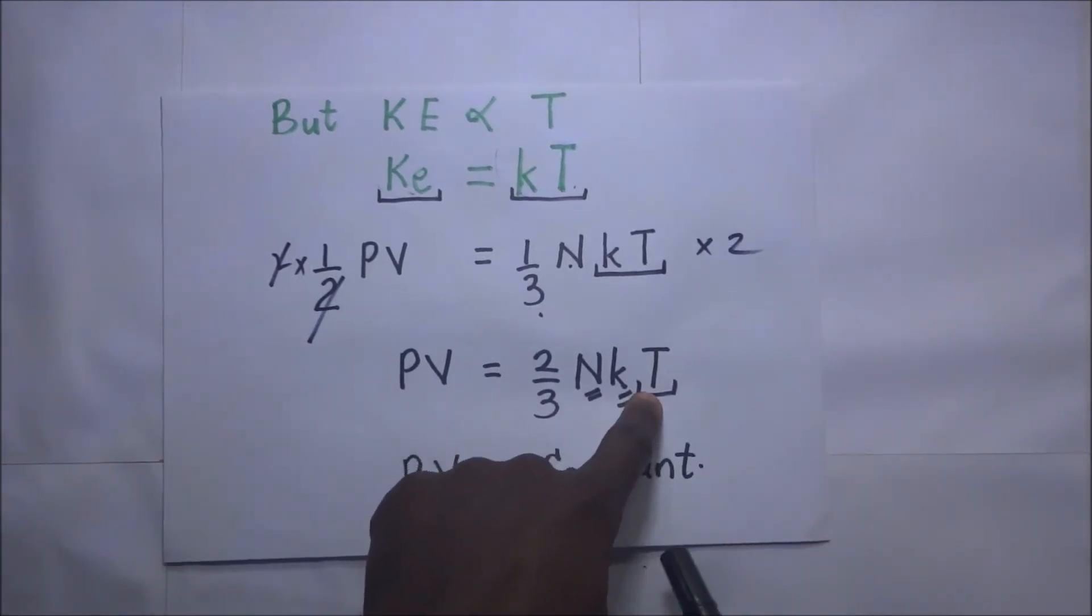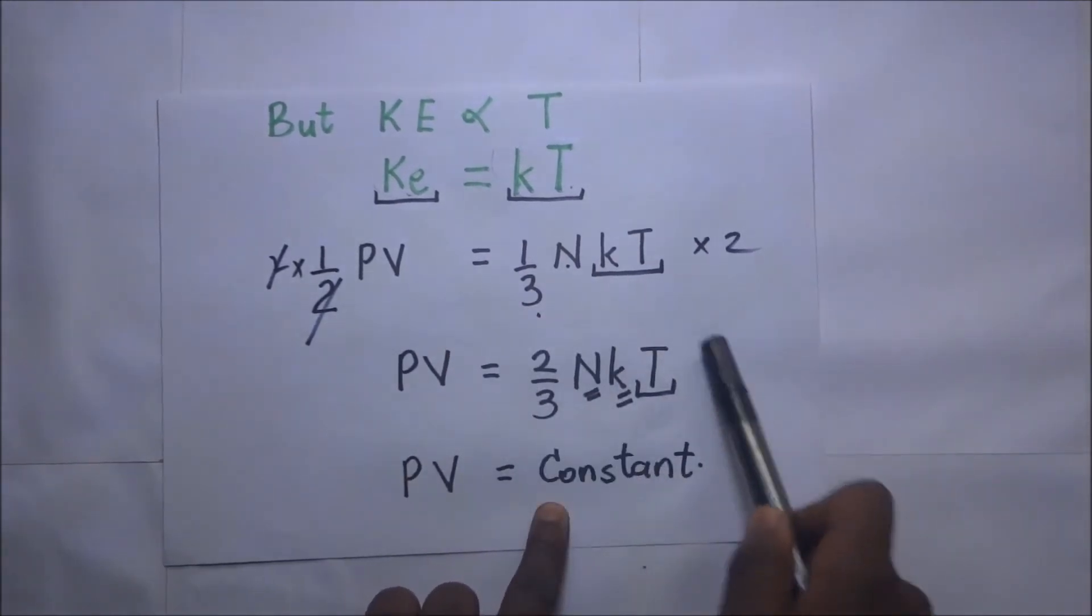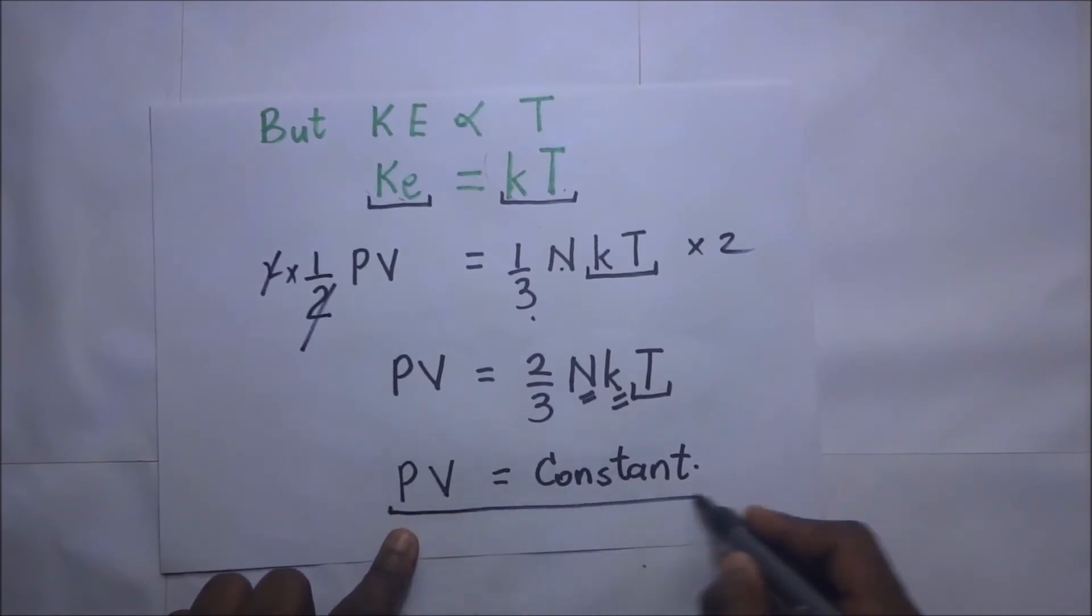So it means that as far as this is concerned, when it comes to Boyle's law, this temperature is supposed to be constant. So you realize that as far as this part of the equation is concerned, all this is constant. And you realize that PV is equal to a constant,